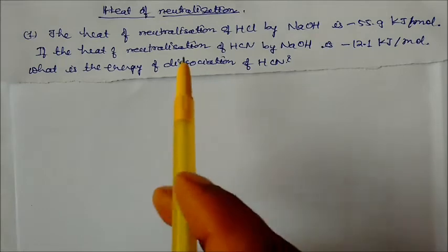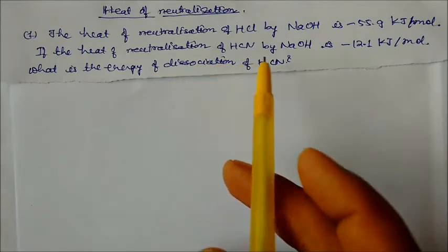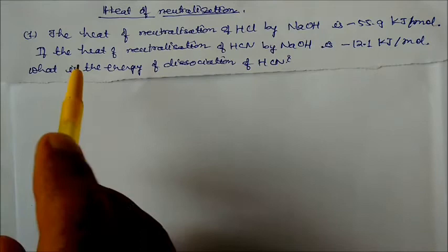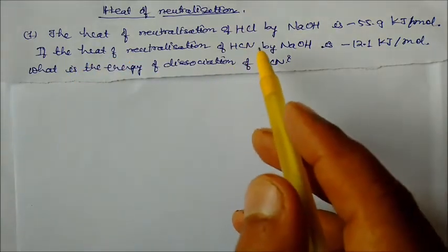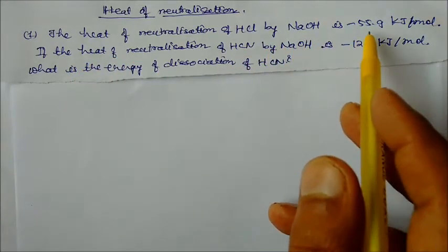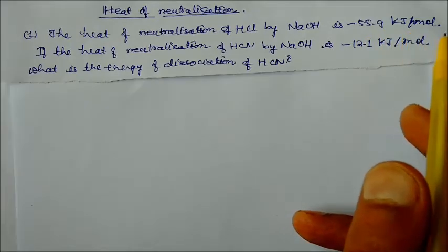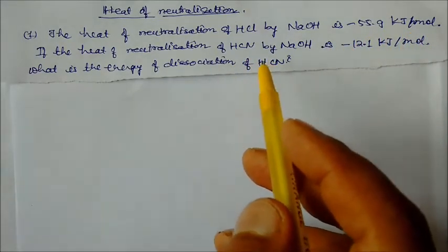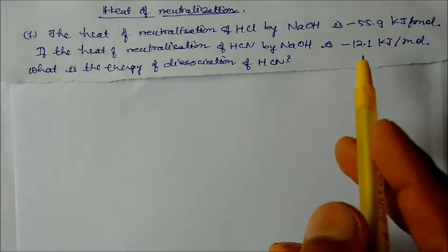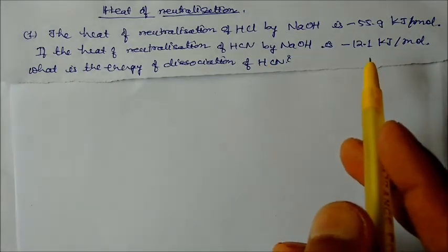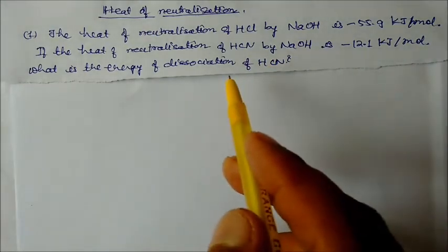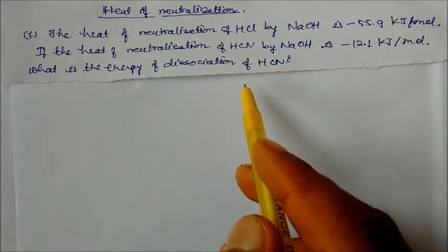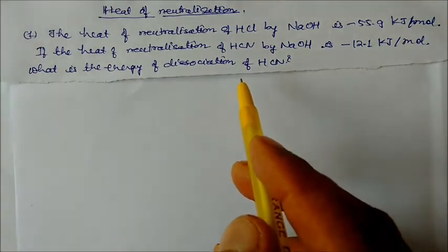Let's start a topic called heat of neutralization. In this problem, the heat of neutralization of HCl by NaOH is minus 55.9 kJ/mol. If the heat of neutralization of HCN by NaOH is minus 12.1 kJ/mol, we have to find the energy of dissociation of HCN.